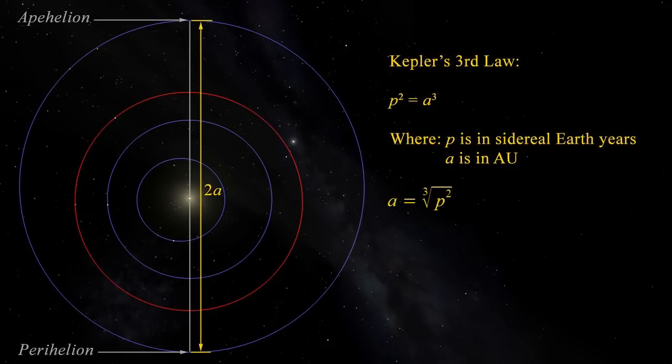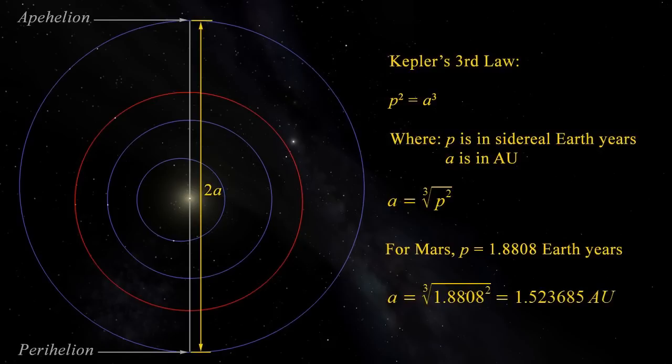1au is the distance from Earth to the Sun. The semi-major axis, a, is the cube root of p squared. For Mars, its orbital period is 1.8808 Earth years, so its semi-major axis works out to be 1.523685 au.